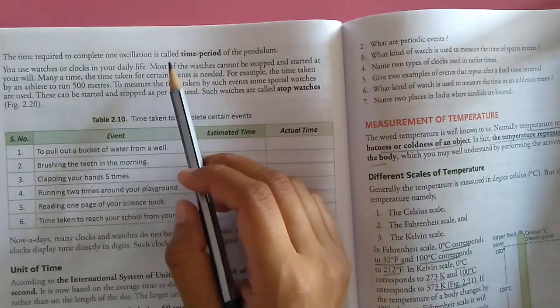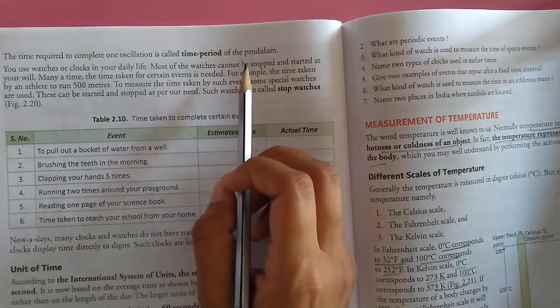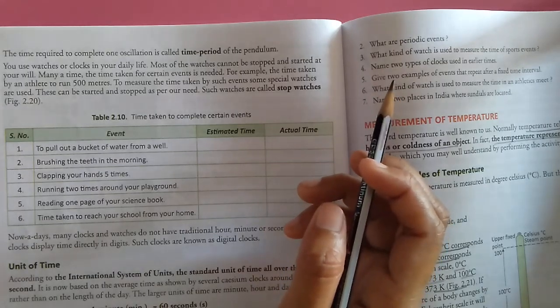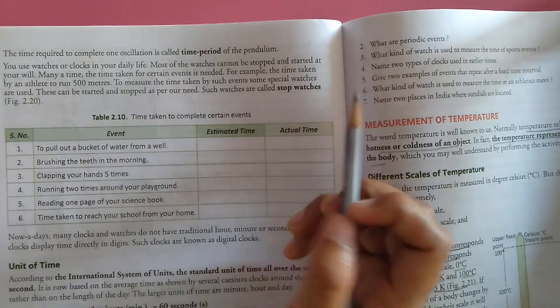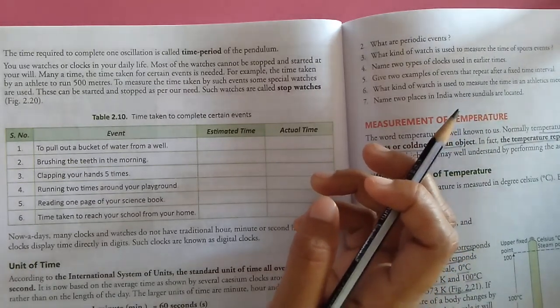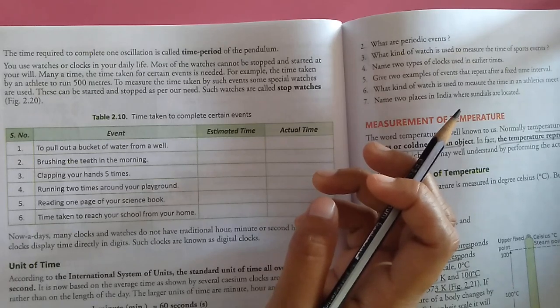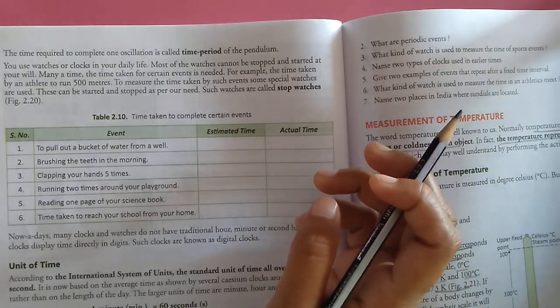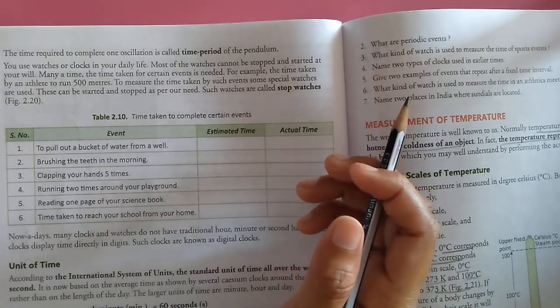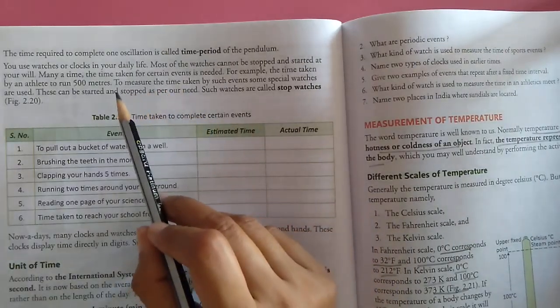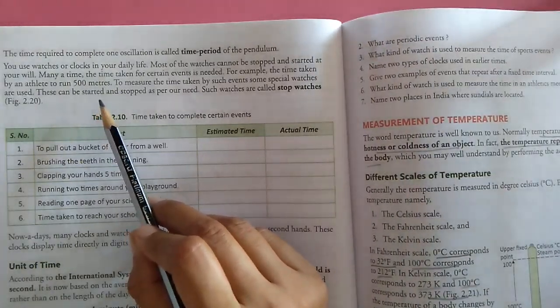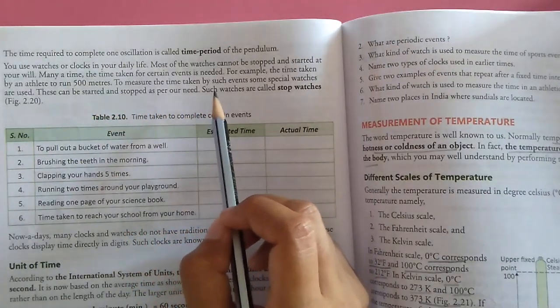The time required to complete one oscillation is called time period of the pendulum. Watches and clocks we use daily cannot be stopped and started according to your will. They continuously keep time. Many times the time taken for certain events is needed, just like the time taken by an athlete to run 500 meters. To measure the time taken by such events, some special watches are used. These can be started and stopped as per our need.